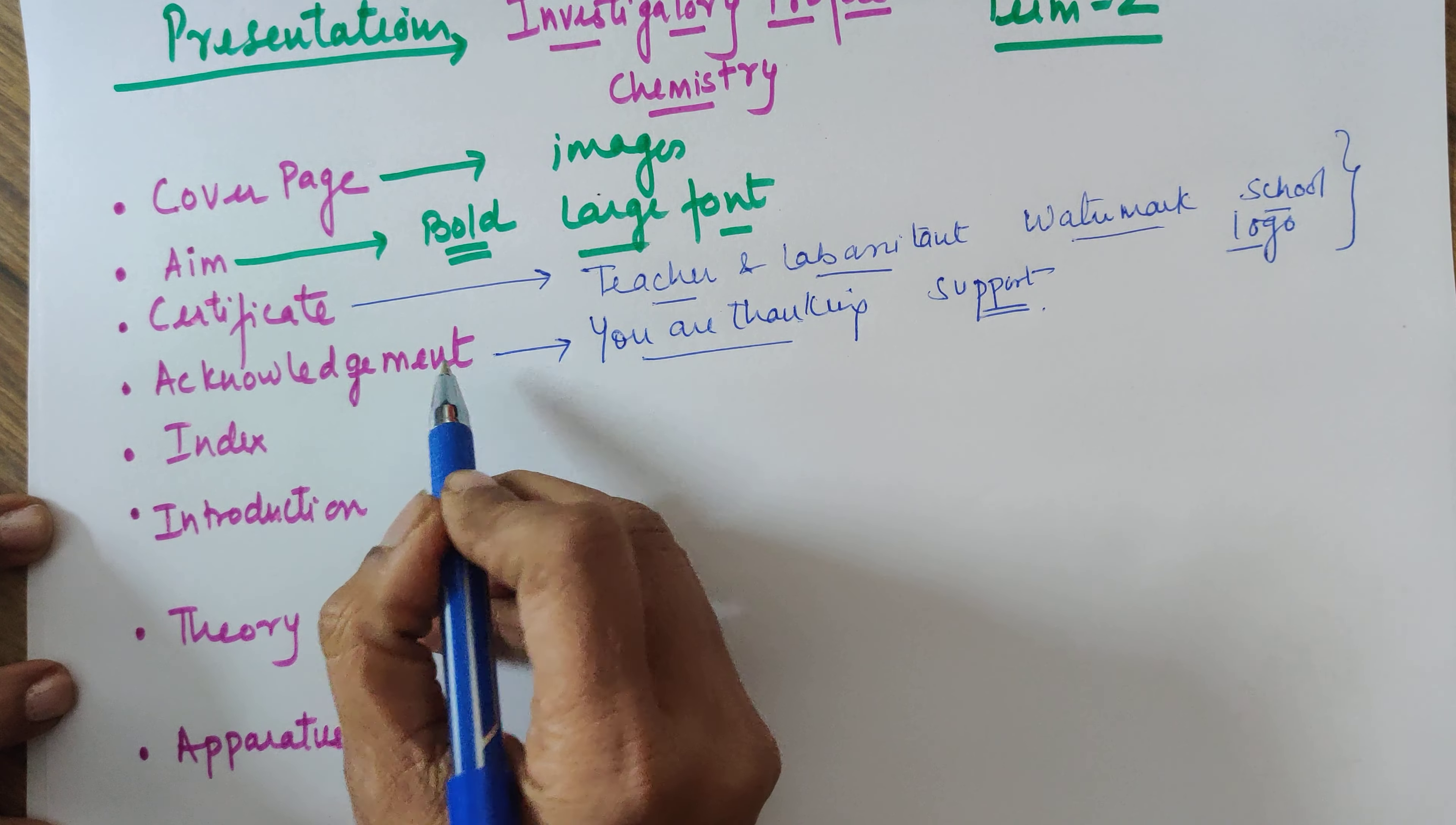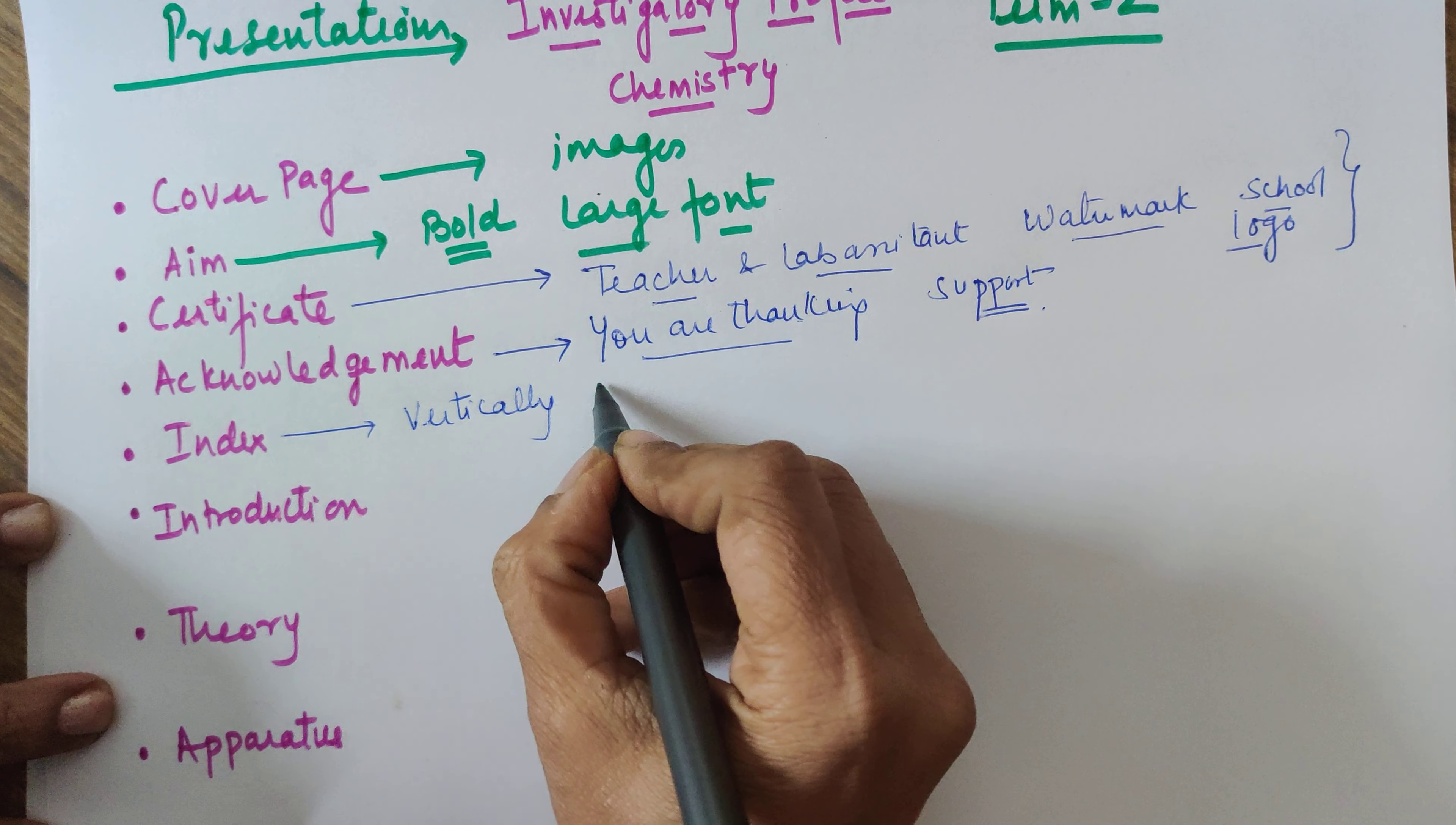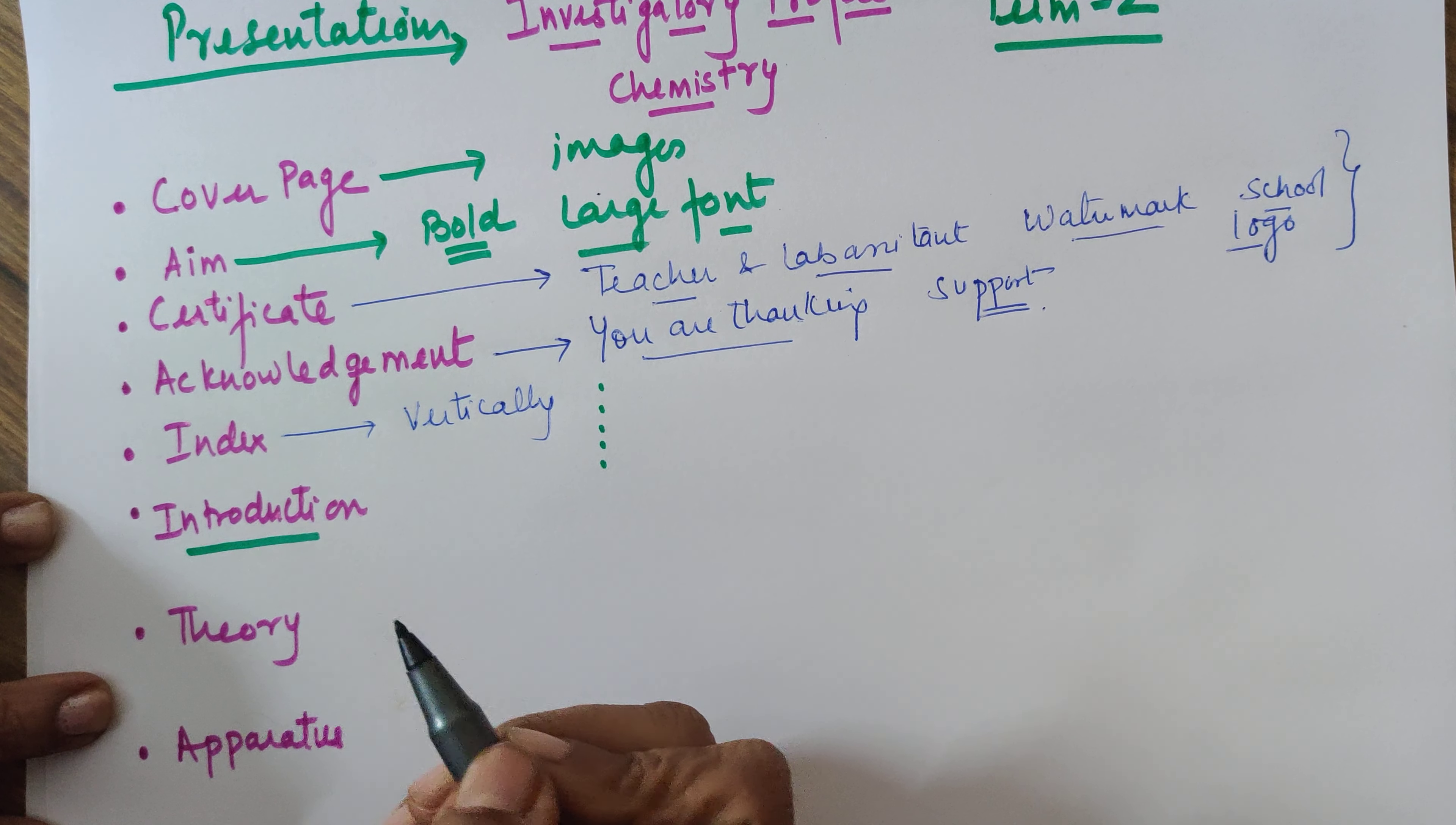Now comes the index. Under the category of index, write the contents vertically. You have your aim, apparatus, theory, etc., they are to be mentioned in bullets in vertical order. Next is your introduction.